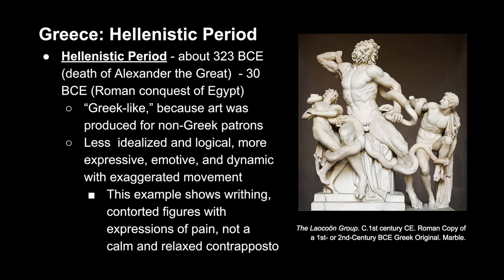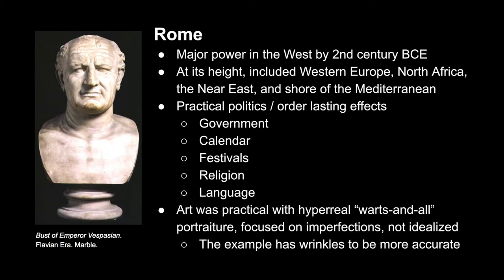This is also another example of hierarchy of scale, because the main figure is much larger than the other two. Moving on to Rome, who became a major power in the West by the 2nd century BCE. At its height, it included Western Europe, Northern Africa, and the Near East, along with the shore of the Mediterranean. Some of the practical politics and order had very lasting effects that we see even today, such as government, their calendar, festivals, religion, and the language.